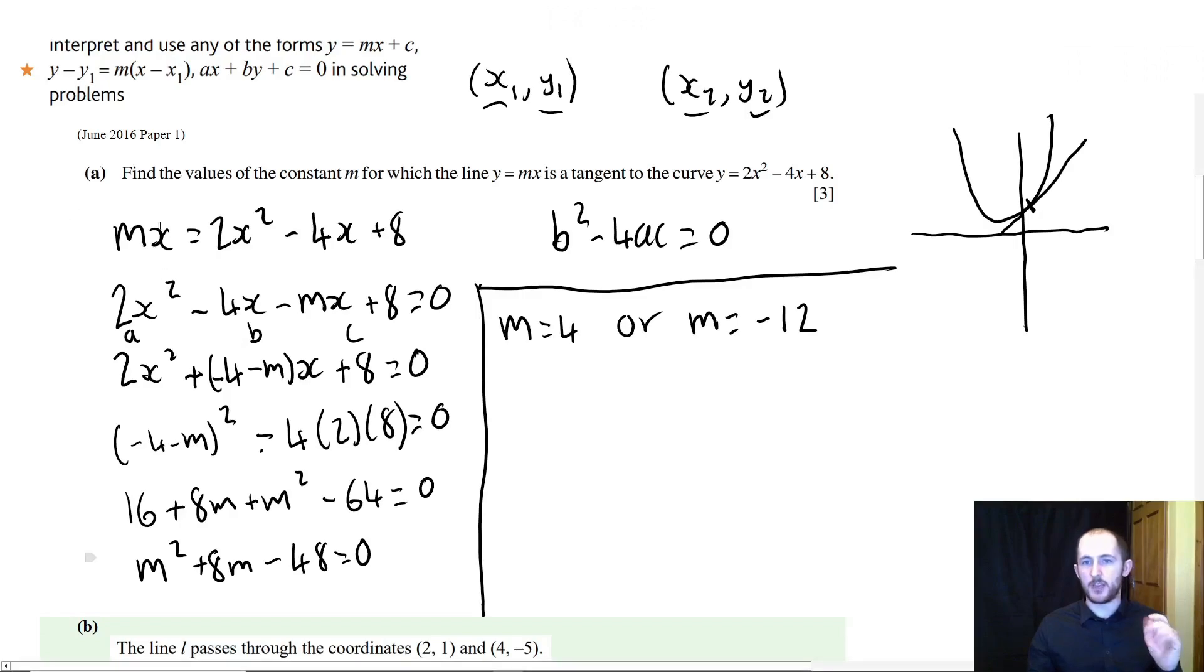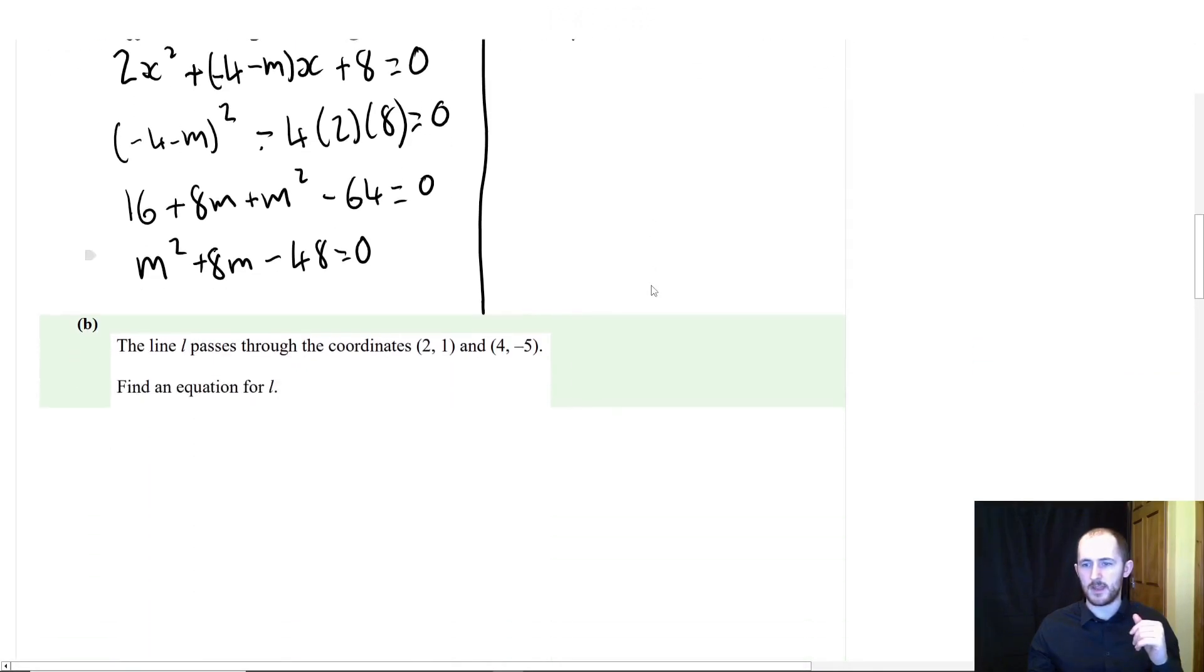Keep in mind you could have easily factorised that if you wanted to. Either way you want to do it, completely fine. And if you look, it does say values with an s on the end. So we have two answers, that's completely fine. This kind of question does come up somewhat frequently. Every couple of years they chuck it in. So it might be a good one to kind of have in your back pocket.